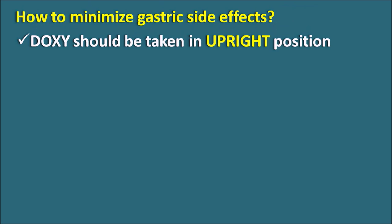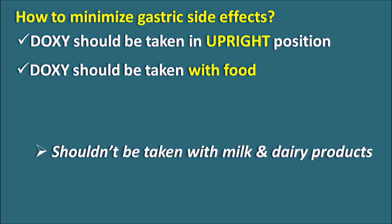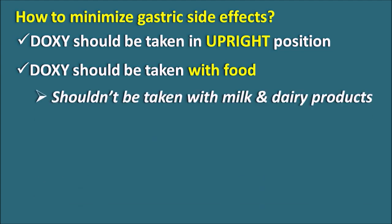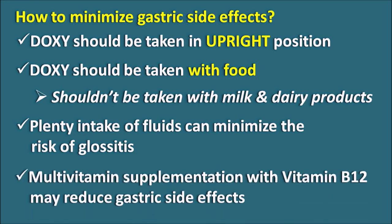To minimize gastric side effects, doxycycline should be taken in the upright position to prevent esophagitis and glossitis. It should be taken with food to minimize gastrointestinal side effects. However, this drug should not be taken with milk or dairy products, as these contain calcium which forms a complex with doxycycline and reduces its absorption. Similarly, it should not be taken with antacids or iron products. Plenty of fluid intake and multivitamin supplementation, particularly vitamin B12, may also reduce gastric side effects.